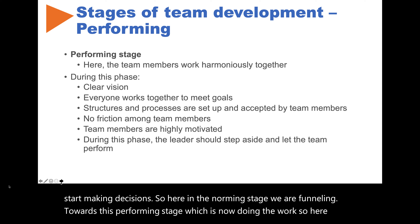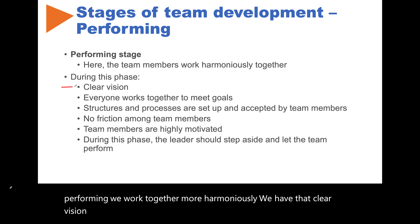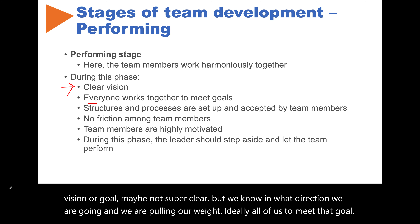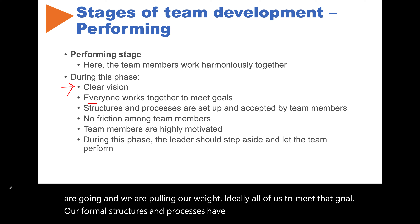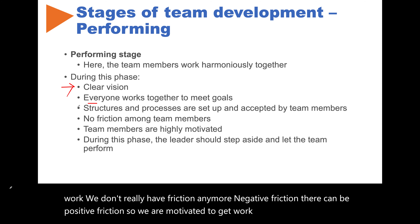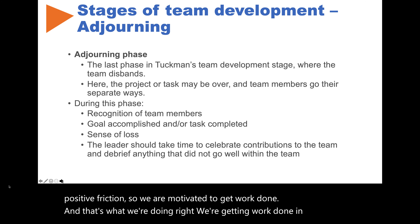In stage four, performing, we work together more harmoniously. We have a clear vision or goal — we know what direction we are going — and we are all pulling our weight to meet that goal. Our formal structures and processes have been set up; we know how to work and don't really have negative friction anymore. There can be positive friction. We are motivated to get work done, and that's what we're doing in this performing stage.